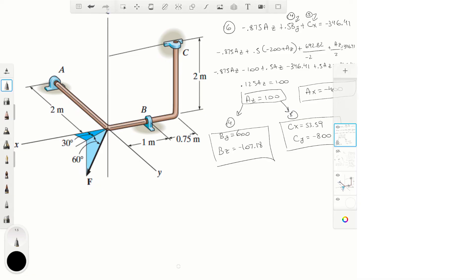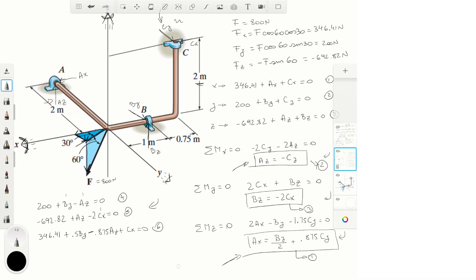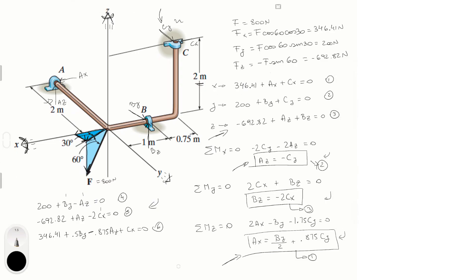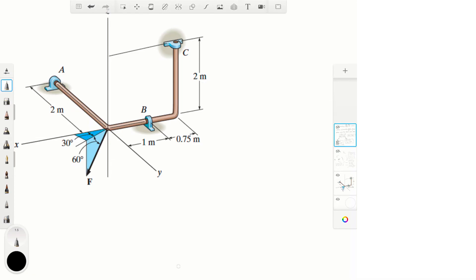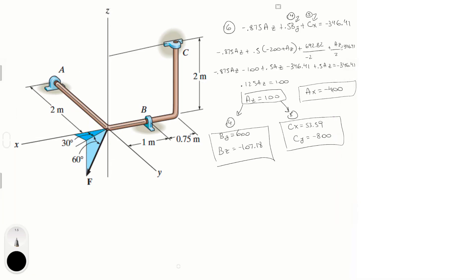To recap: we wrote force equilibrium in X, Y, and Z, recognized we had too many variables, then took moments about the X, Y, and Z axes to get three more equations. We substituted to reduce to a 3×3 system, solved it, and then back-substituted for all remaining unknowns. Final answers: reactions at A are AX = −400, AZ = 800; reactions at B are BY = −600, BZ = −107.18; reactions at C are CX = 53.59, CY = −800.